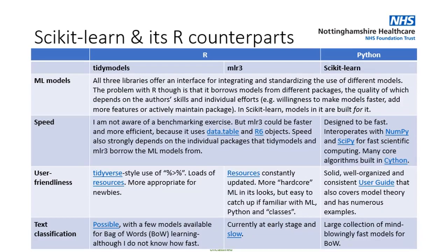I'm not going to spend time on this slide, but I put it here for you to review at your own time. It's a summary of some key differences between state-of-the-art machine learning packages in R and Python, and where each wins and loses. If you ask me, I think scikit-learn wins — but take a look at your own time. It's a good reference.